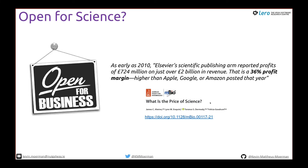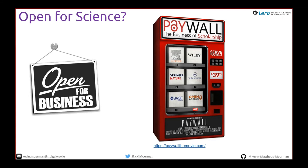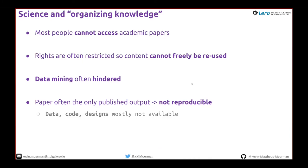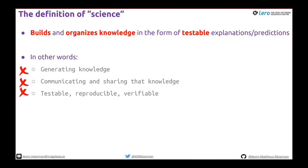There's an article 'What is the Price of Science?' that summarizes these aspects, and a great movie called 'Paywall: The Movie' that is itself free and open access. Most people cannot access academic papers, rights are often restricted so content cannot be reused, data mining is hindered, and the paper is often the only published output. We should be publishing all the science — data, code, and hardware designs — because with just the PDF you still can't reproduce the science.